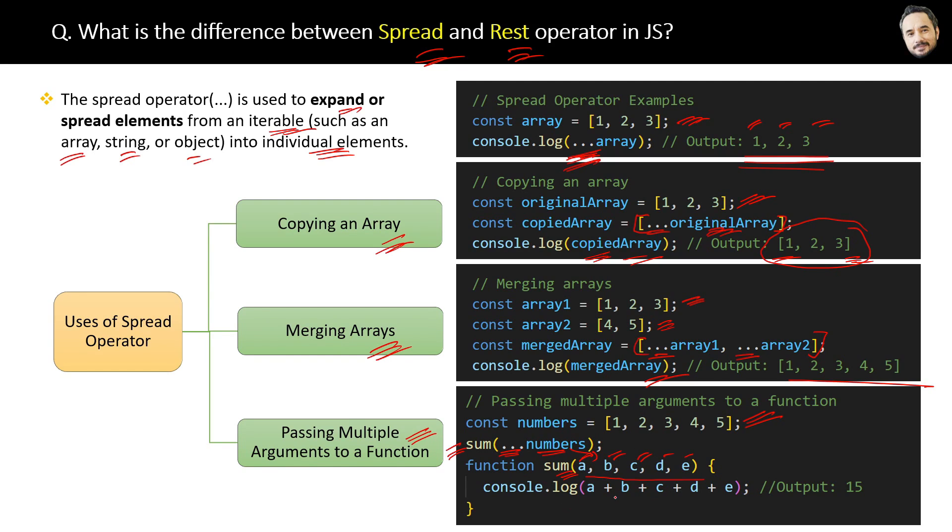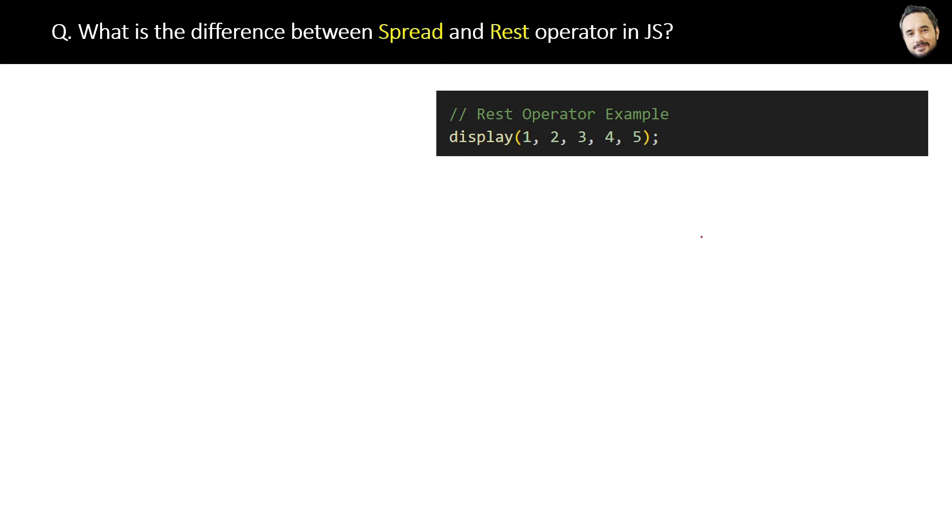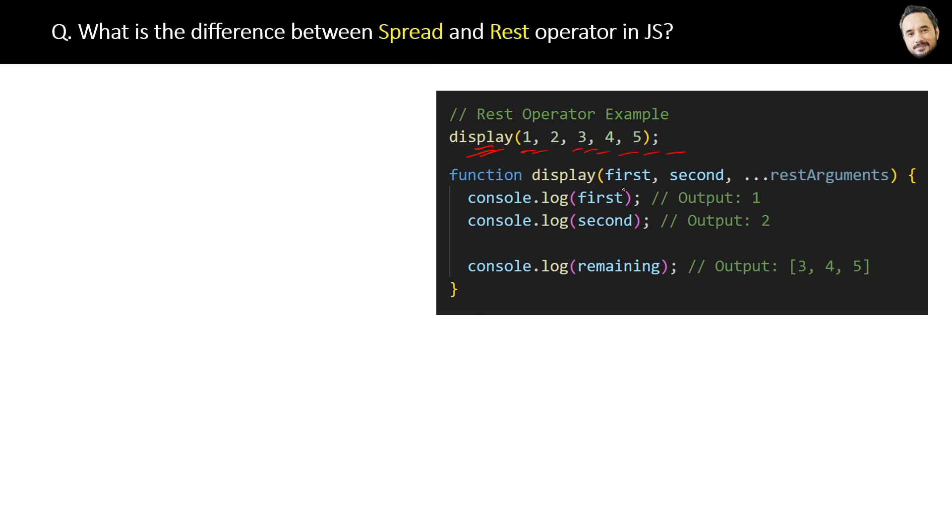So this is the whole story about the spread operator where we are just spreading the single array to multiple individual elements. And mostly we use spread operators, but sometimes in very few cases we also use rest operators. Okay, so let's quickly explore them also. Here you can see we are calling a function display with few arguments. Now in the function body we can receive the argument in a partial way.